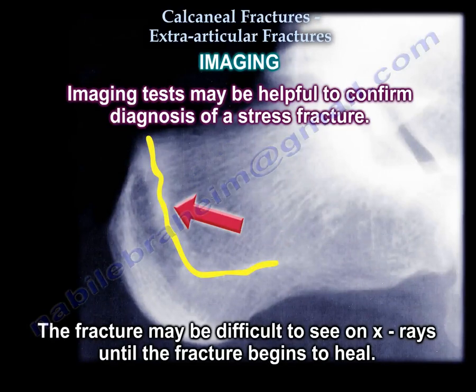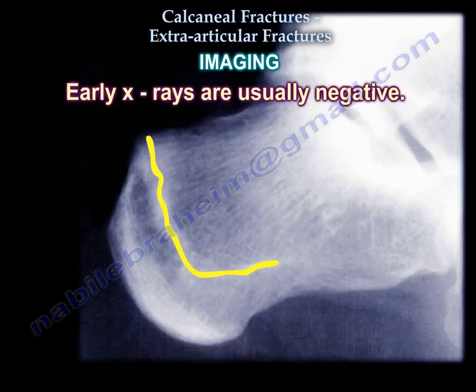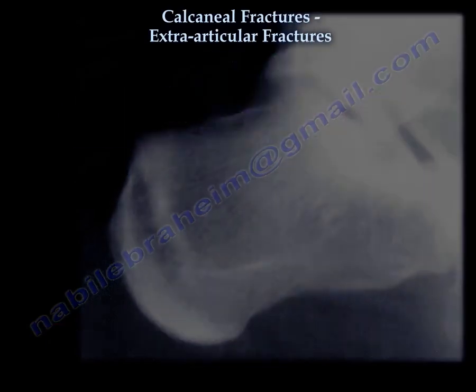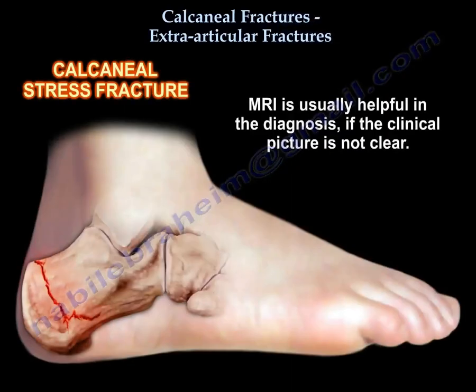Imaging tests may be helpful to confirm the diagnosis of a calcaneal stress fracture. The fracture may be difficult to see on x-rays until it begins to heal, and x-rays are usually negative initially. X-rays at 4 to 6 weeks will show a fracture line on the posterior aspect of the calcaneus as a radio-dense vertical line; it is extraarticular and best seen on a lateral x-ray of the foot. MRI is usually helpful if the clinical picture is not clear.